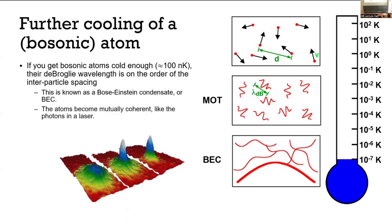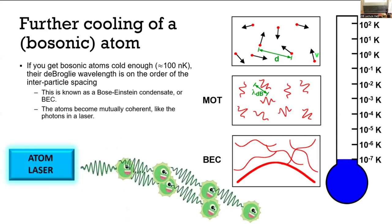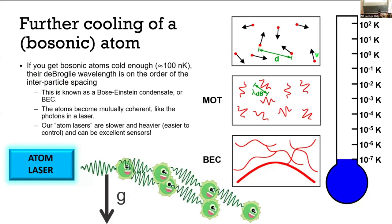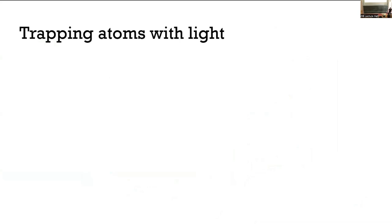The atoms become mutually coherent, like the photons in a laser, which is pretty fun because our atom laser — my slightly deranged atoms — are indeed more or less coherent. But they can also be excellent sensors because, for example, they fall under gravity. It's actually a very good thing that my laser doesn't do that, otherwise there would be a lot of corrective optics. But it's good that the atoms do.